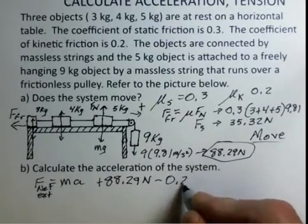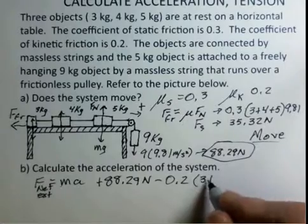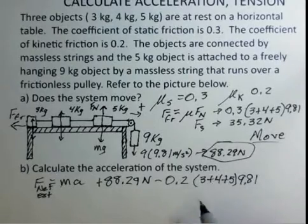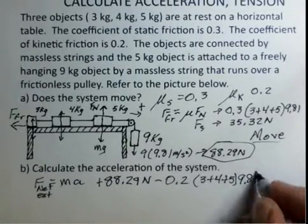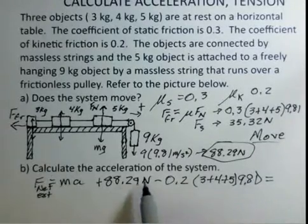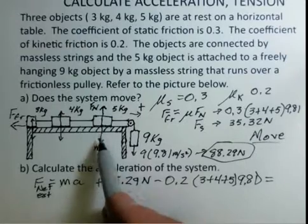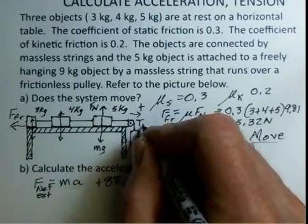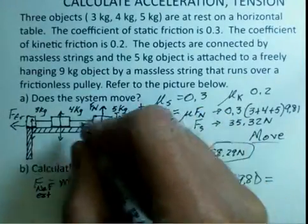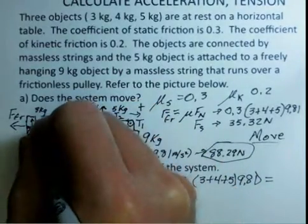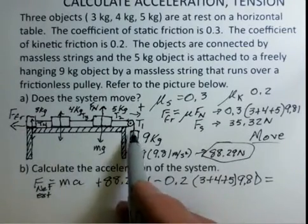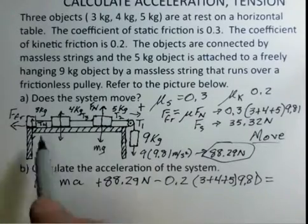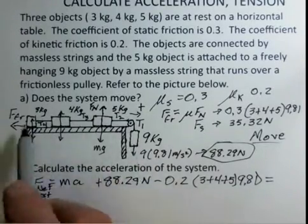Using the kinetic coefficient 0.2, we add up all the masses for the normal force calculation. The net external force is 88.29 newtons minus the kinetic friction. The mg and normal force are not in the direction of motion, so they're excluded. The tension forces T1, T2, T3, and T4 are internal to the system and are also excluded.